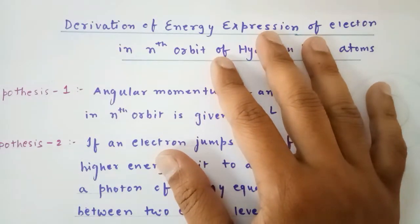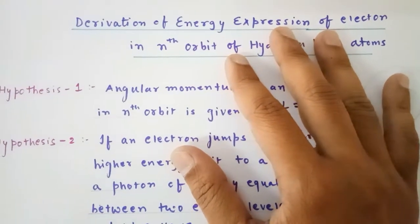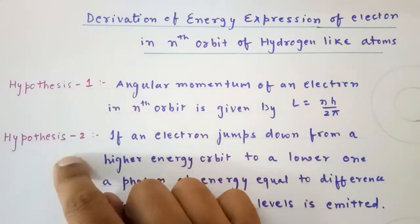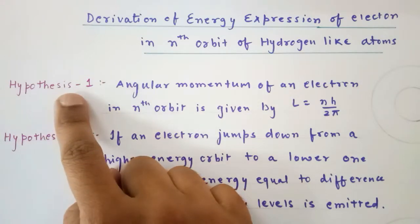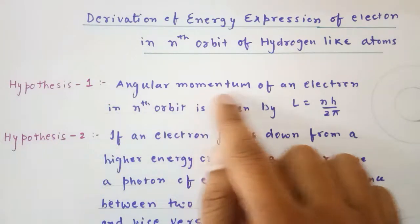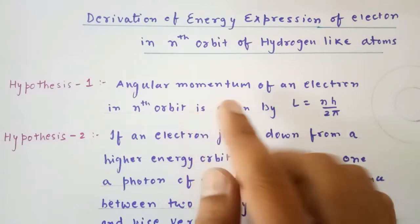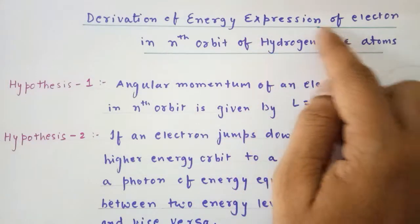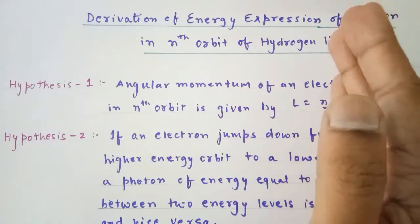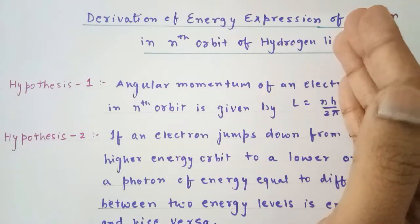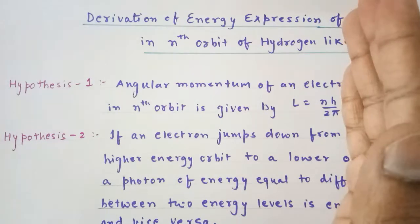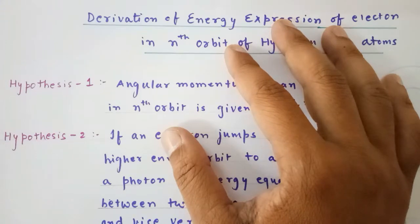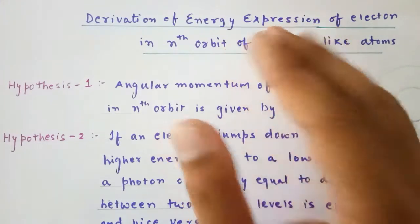Before the derivation, we are supposed to accept two points without derivation — that is why they are named as hypotheses. The first hypothesis deals with the angular momentum of an electron in the nth orbit of hydrogen-like atoms. This concept is only for hydrogen and hydrogen-like atoms, and this theory does not hold true for atomic numbers greater than 5 to 6.